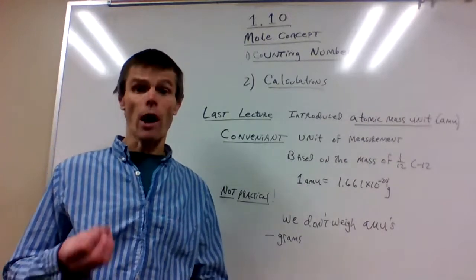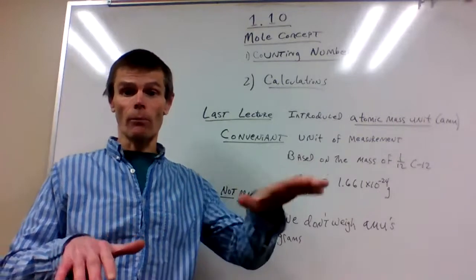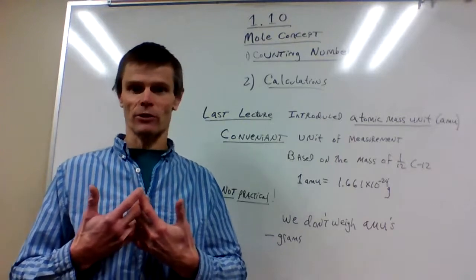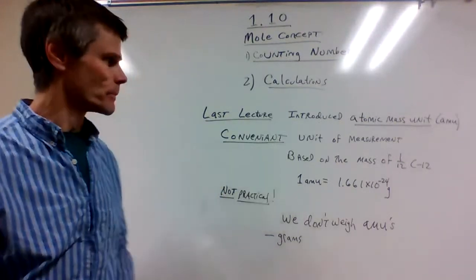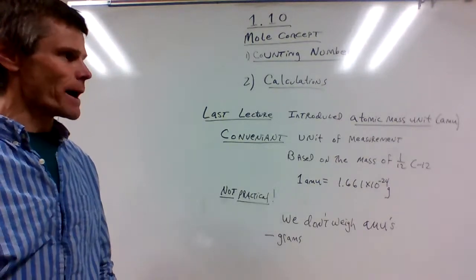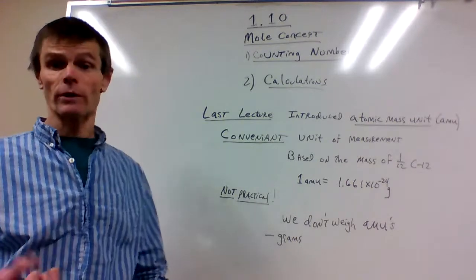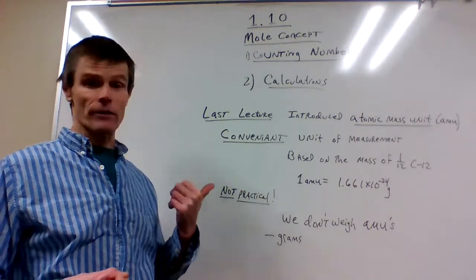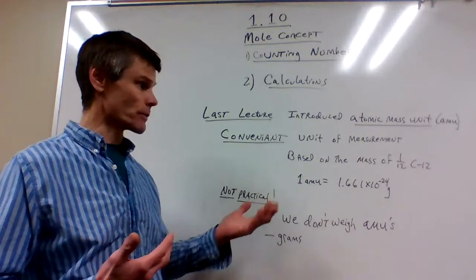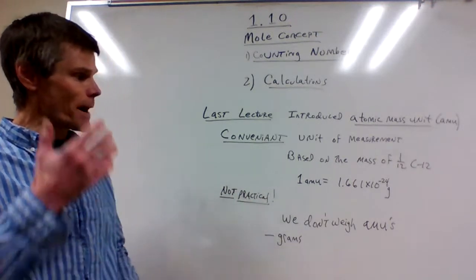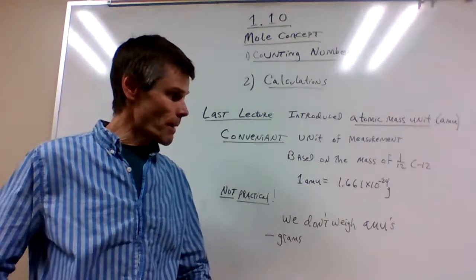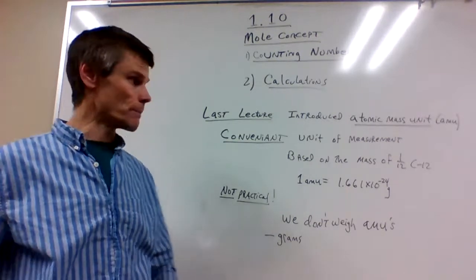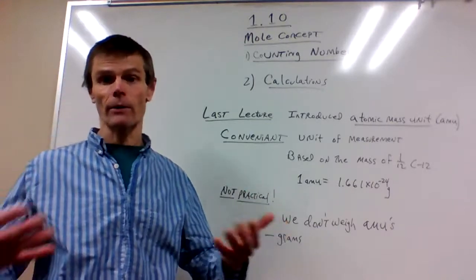In the last lecture, we introduced the atomic mass unit, and we're going to show how the mole and the atomic mass unit are related, and how it makes our life a little bit easier using the periodic table. The atomic mass unit is referred to as the AMU. It's a convenient unit of measurement that uses a reference point of the carbon-12 isotope, based on 1/12th the mass of atoms in carbon-12. One atomic mass unit has a defined mass of 1.661 times 10 to the negative 24th grams — a pretty small unit, convenient for comparing atoms of different elements.